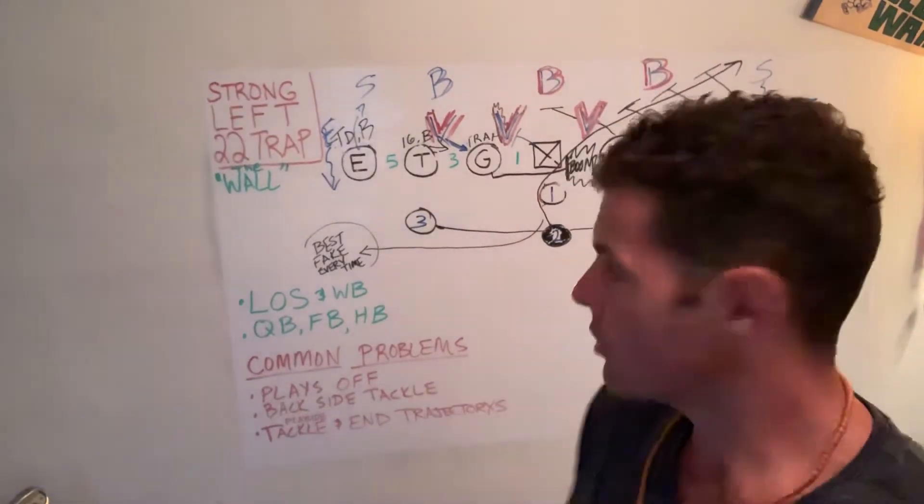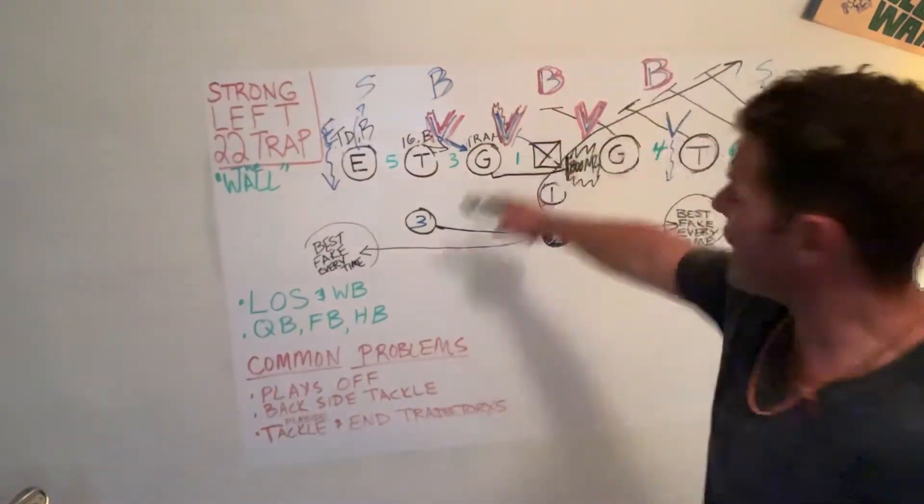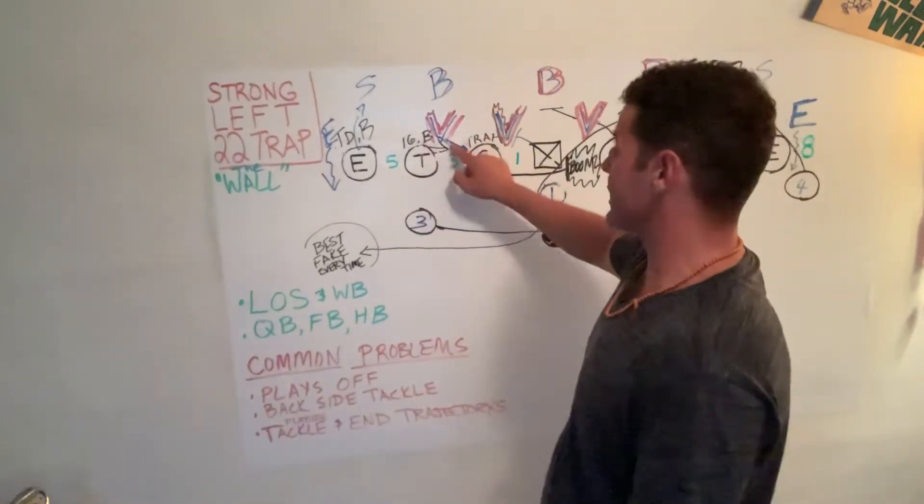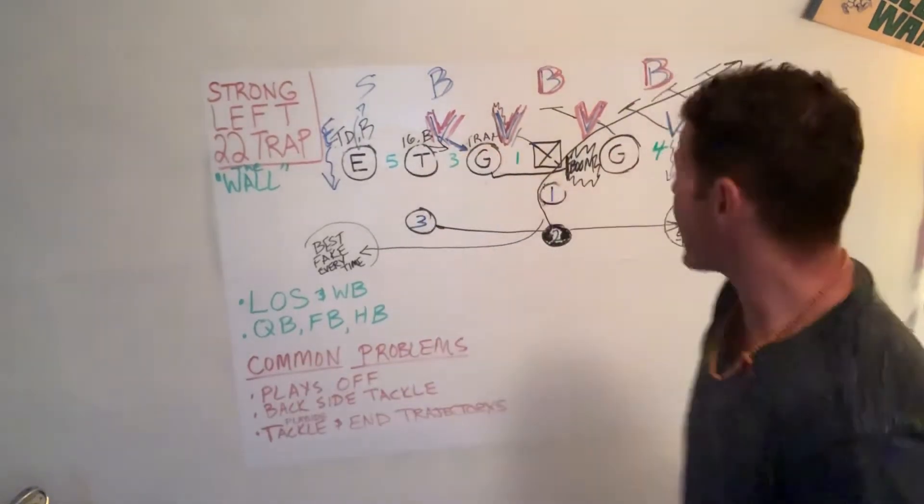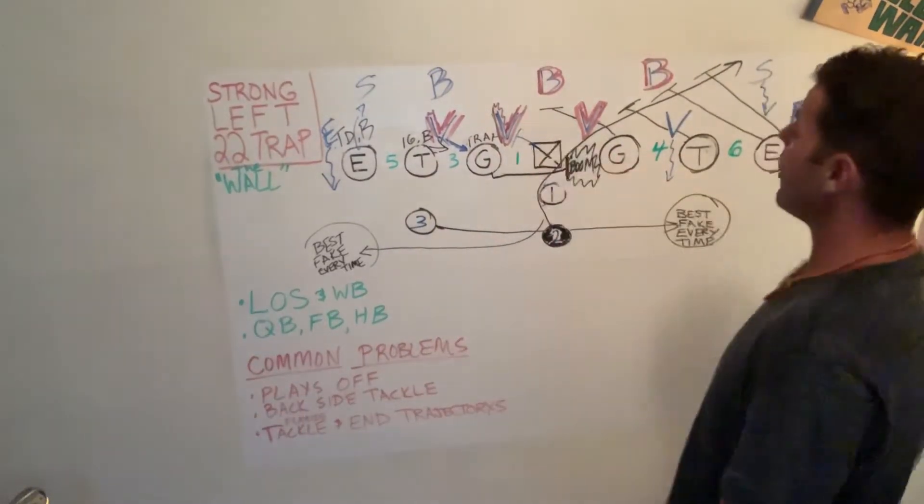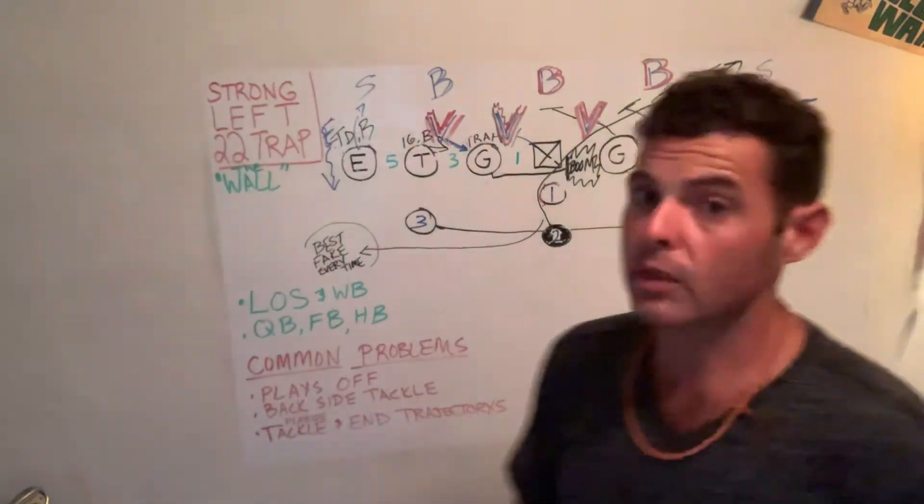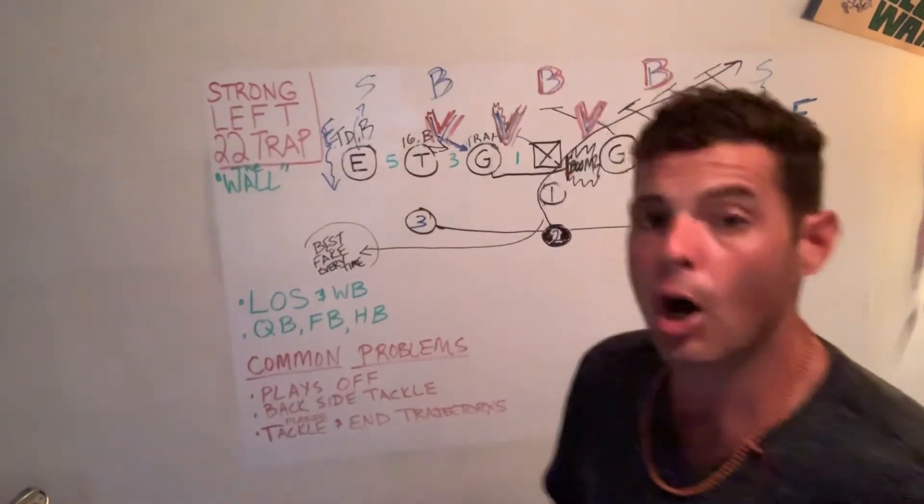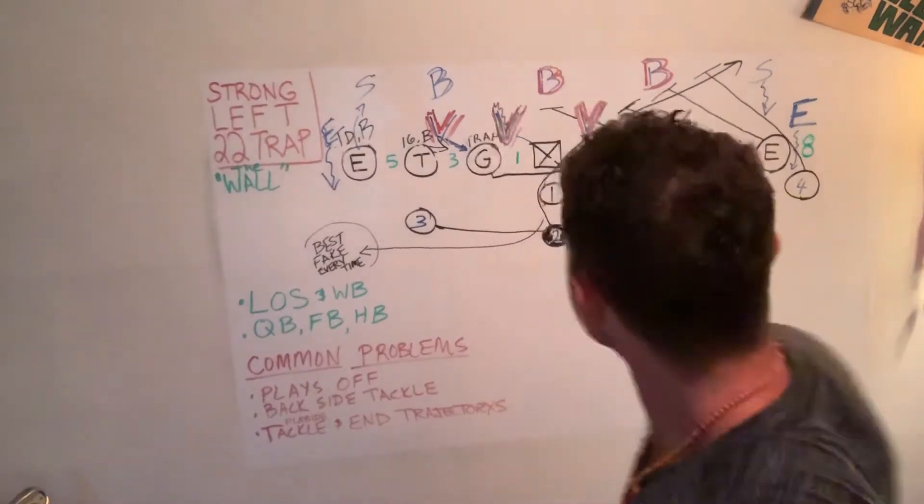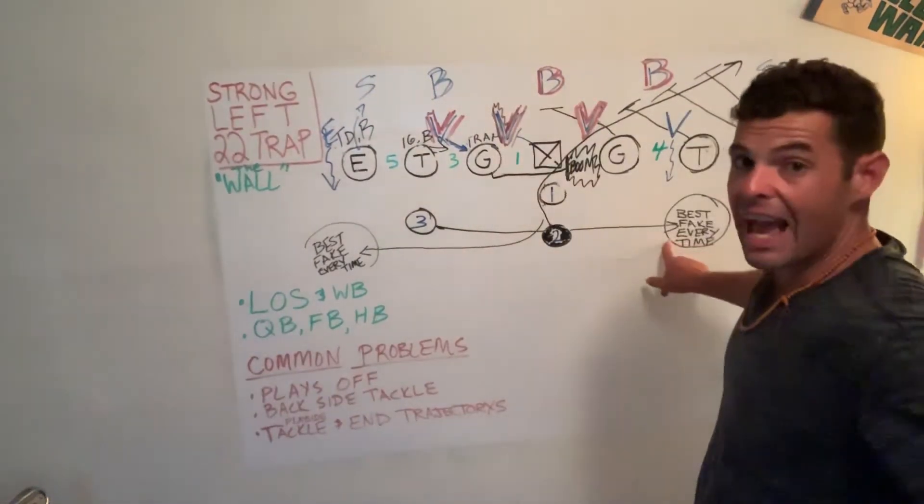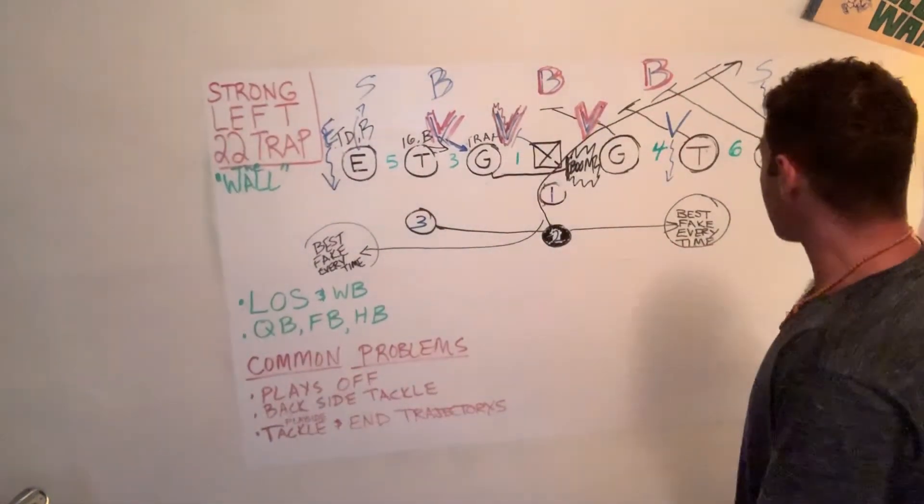It's a wall, right? We get that big wall over here. We got to make sure we cut this guy down. Backside tackle. Center's going to go away. Fullback's got to go as fast as he possibly can. Low, two hands on the ball. Best fakes ever. Best fakes every time. B-F-E-T.